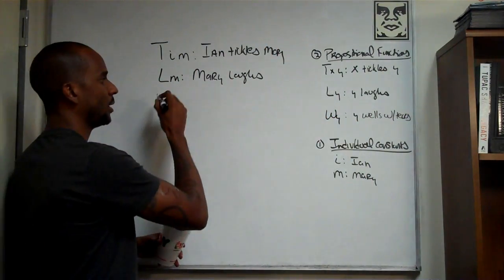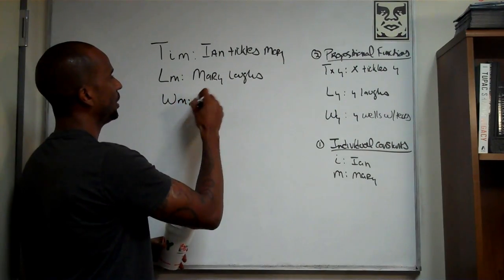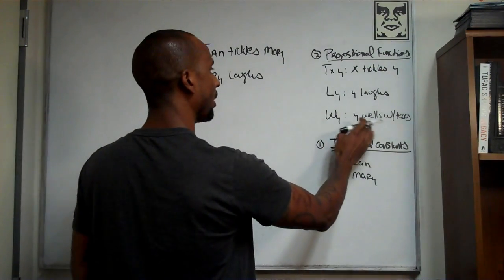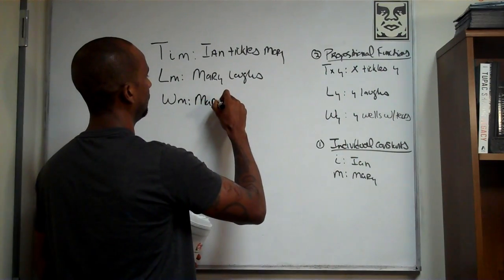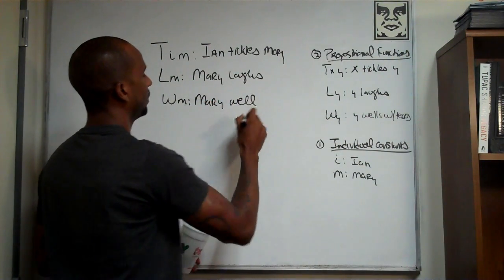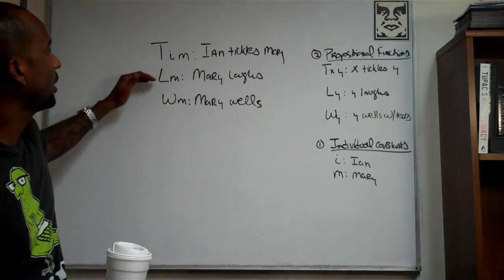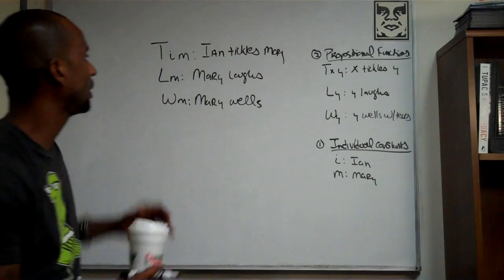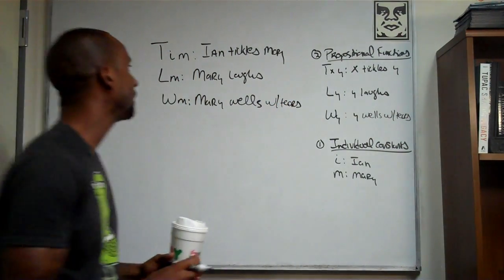So that way you can have w, for example, m, which would be Mary wells with tears. Mary wells with tears. Okay, so we have Ian tickles Mary, Mary laughs, Mary wells with tears. Okay, pretty basic stuff.